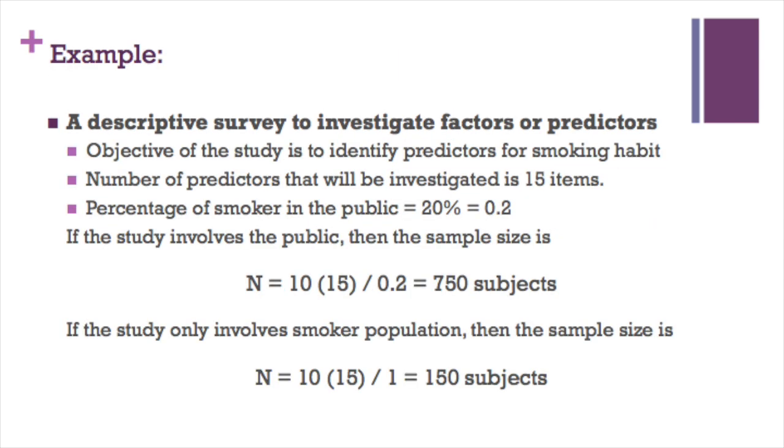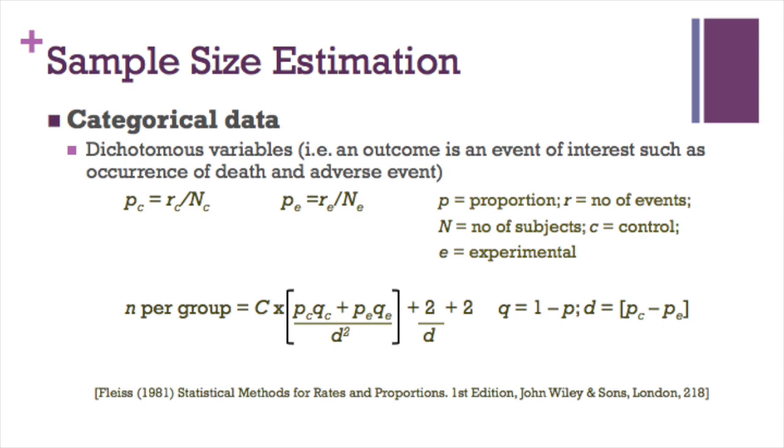For example, the study objective is to identify predictors for smoking habit. Number of predictors that will be investigated is 15 items. Percentage of smokers in the public is 20 percent. If the study involves the public population, then the sample size is 750 subjects. If the study only involves smoker population, then the sample size is 150 subjects.